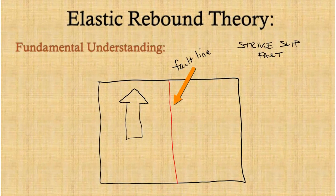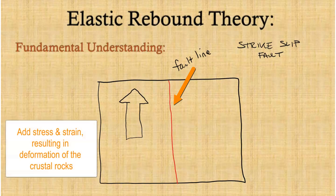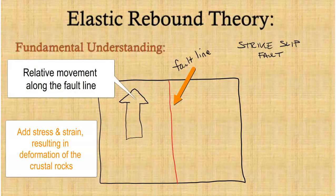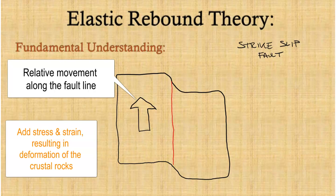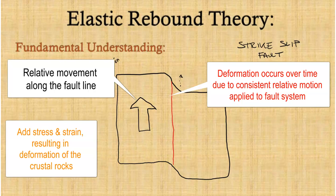Looking at a general diagram, we have a strike-slip fault with left lateral movement, with fault lines in red viewed from an aerial perspective. Elastic rebound theory involves the addition of stress and strain into a fault block system like this, with relative movement that causes stress, strain, and deformation. Over time, this deformation becomes visible in the surface crustal rocks as a slow creep or displacement, and the area around the fault line comes under immense pressure and stress due to the relative motion.